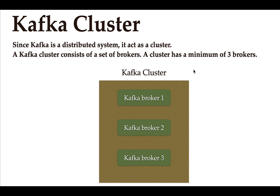Let's begin with the Kafka cluster. Apache Kafka is a distributed system, and it acts as a cluster. A Kafka cluster consists of a set of brokers — a cluster has a minimum of three brokers. As you can see in the diagram, a Kafka cluster consists of one or more brokers, and it is recommended to have at least three brokers in a production Kafka cluster.